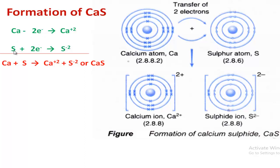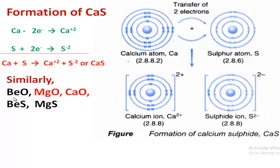In the diagram, calcium 2-8-8-2 releases its valence two electrons and sulfide ion accepts those two electrons. Calcium is converted into calcium ion and sulfur is converted into sulfide ion. Metal atoms release two electrons and sulfur atom accepts two electrons. More similar examples are: beryllium oxide, magnesium oxide, calcium oxide, beryllium sulfide, and magnesium sulfide. Among these, two are very very important, so you will practice at home using language and diagram.